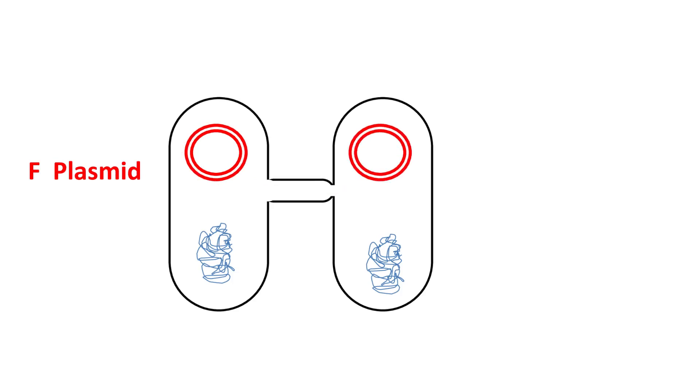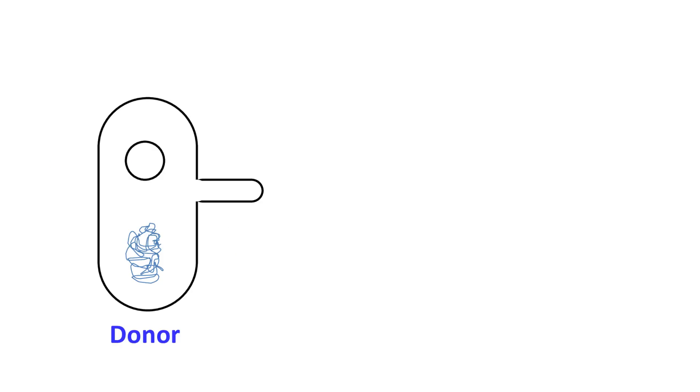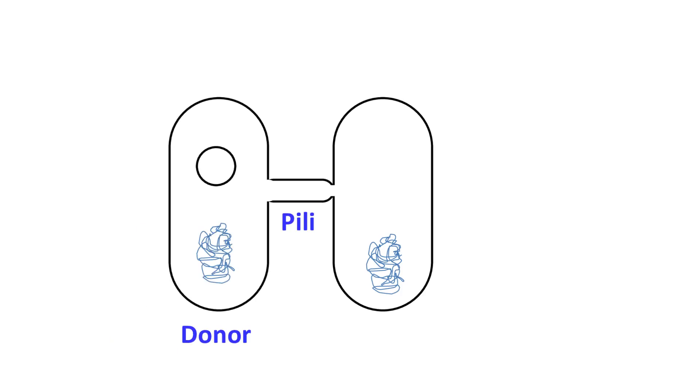During conjugation, the donor cell produces a structure known as the pili. The pili attaches to the recipient cell and brings both the cells close to one another.